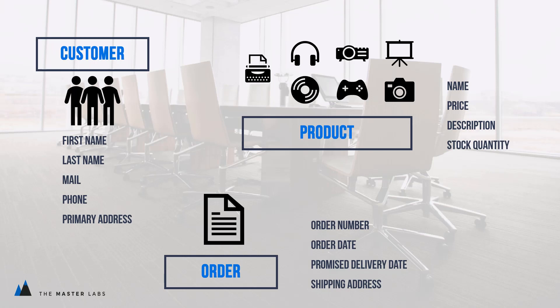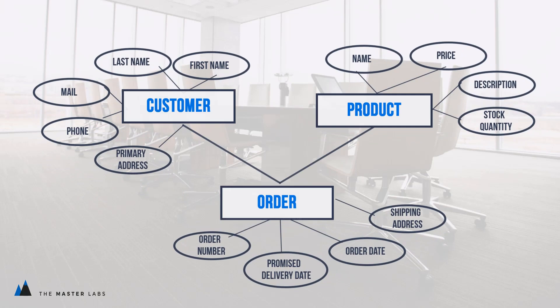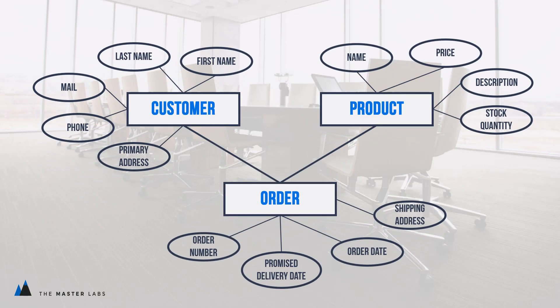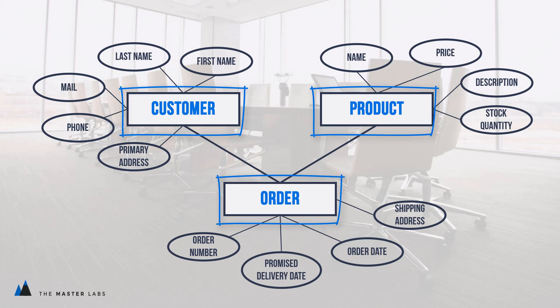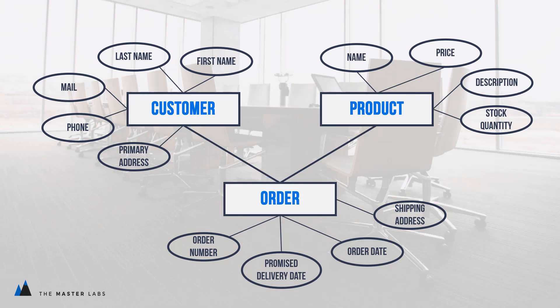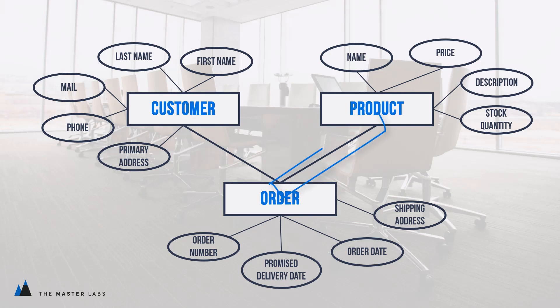This drawing is called an entity relationship diagram, and in this example it would look something like this. We have customer, product and order in rectangular shapes. The lines between customer and order and between order and product connect to attributes shown in oval shapes. A customer has a relationship with an order, an order has a relationship with a product. For each product we want to keep track of the name, price, description and the stock quantity.